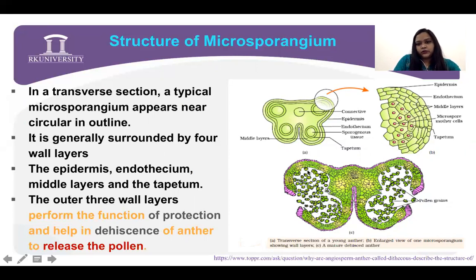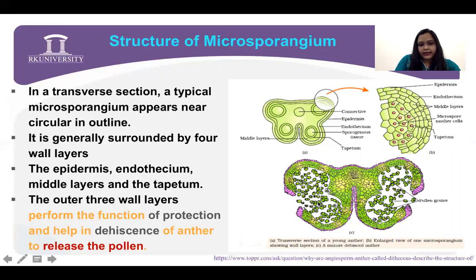Tapetum is the nourishing layer which gives nourishment to the mother cell. The outer three layers perform the function of protection and help in the dehiscence — meaning releasing of the pollen grains. Here in the transverse section, the pollen grains are inside the four chambers in a tetrad condition — that is called the pollen grains.